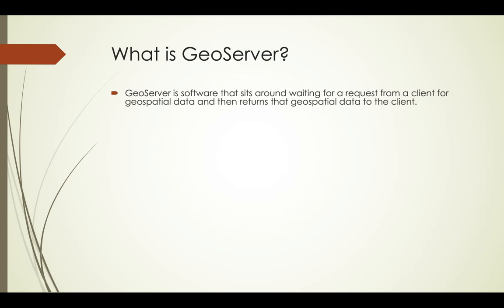And then it returns that data to the client. Now, exactly how it does that is not important to the client, but it is important for us to know a little bit about, because in this course we are going to spend time talking about how exactly to set up GeoServer so that it returns exactly what we want it to return. So the client doesn't have to know how it's going to happen, because we're going to learn how to tell GeoServer how to do it.